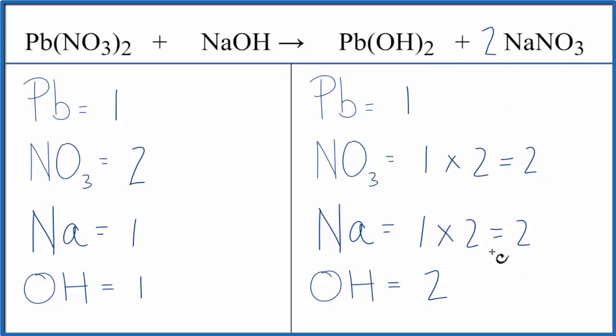Let's fix the sodiums next. We could put a 2 in front of the sodium hydroxide, so 1 times 2, that gives us 2 sodium atoms, those are balanced. And then the OH, the hydroxide, 1 of these times the 2, that'll give us 2 of those. Those are balanced, and we're done.